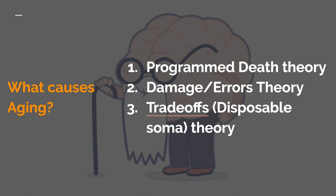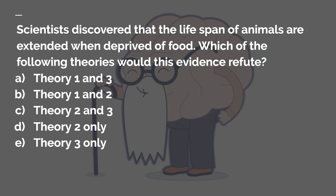Here's a question I would present in this case study: scientists discovered that the lifespan of animals is extended when deprived of food. So which of the following theories would this evidence refute? The answer is E, theory three only. Maybe rewind and listen to the theory explanations one more time if you didn't get that one.